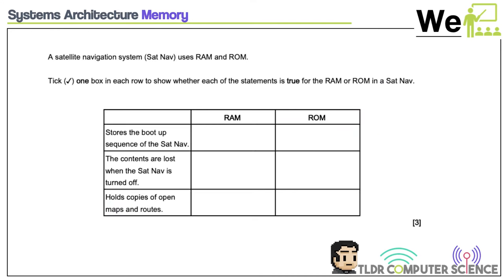A satellite navigation system uses RAM and ROM. Tick one box to show whether each statement is true for ROM or RAM. 'Stores the boot-up sequence of the sat nav': the boot-up is always held on ROM, because RAM will be empty when turned on since it's volatile. 'The contents are lost when the sat nav is turned off': ROM is non-volatile so it keeps all data, while RAM is volatile — as soon as you turn it off, all data will be lost. If you wanted to hold details like routes, you'd need secondary storage like an SD card. 'Holds copies of open maps and routes': this is stuff that will be currently open and running, so that's in RAM.